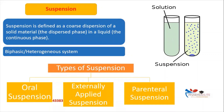Now let's look at the types of suspension. The first type is oral suspension — this suspension is taken by mouth. An example is antacid suspensions. The second type is externally applied suspension, which includes dermatological preparations applied on the skin. Third, we have parenteral suspension, which is given via injections. So these are the three types of suspension.